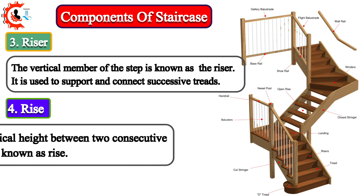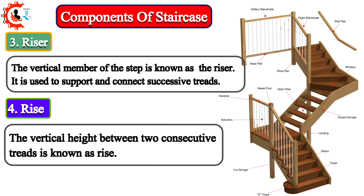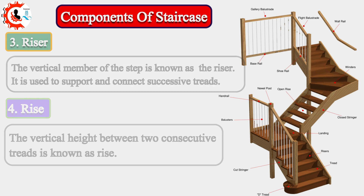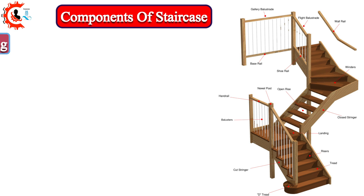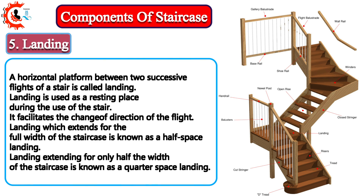4. Rise: The vertical height between two consecutive treads is known as rise. 5. Landing: A horizontal platform between two successive flights of a stair is called landing. Landing is used as a resting place during the use of the stair. It facilitates the change of direction of the flight.